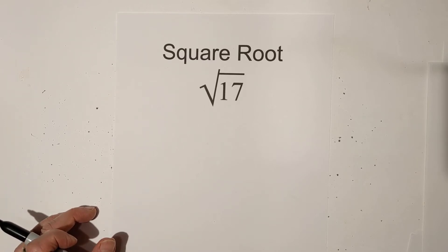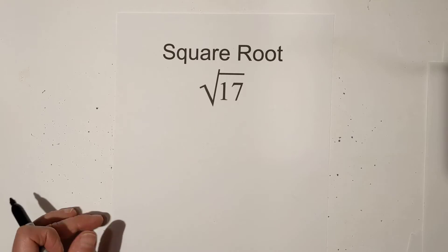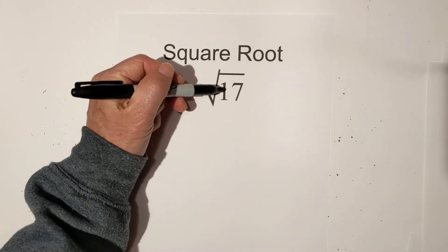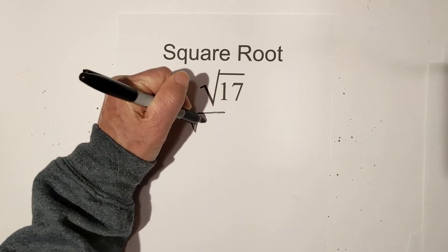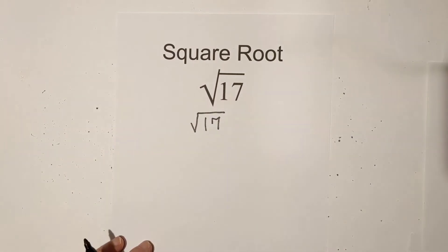First, if you need to simplify the square root of 17, or you may call it the exact square root, then 17 is a prime number, so simplified is just the square root of 17.